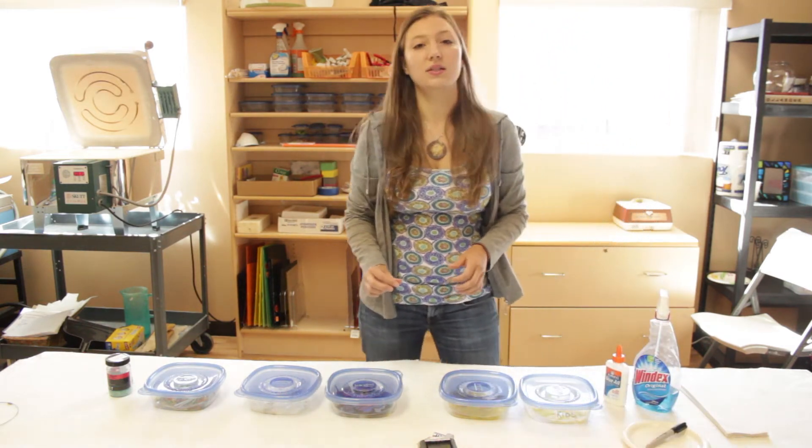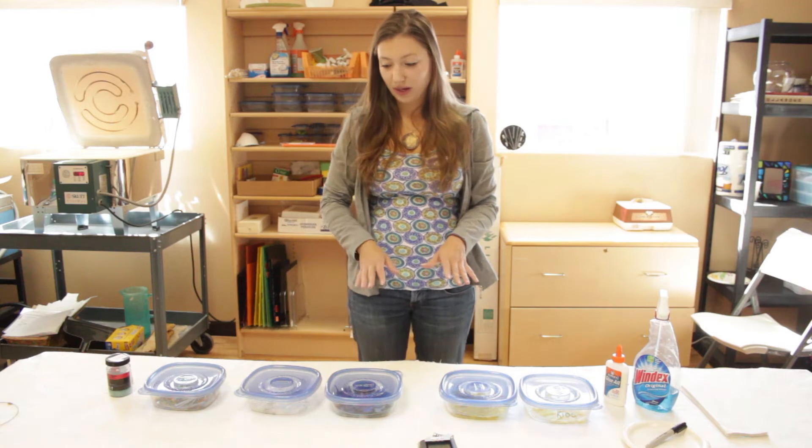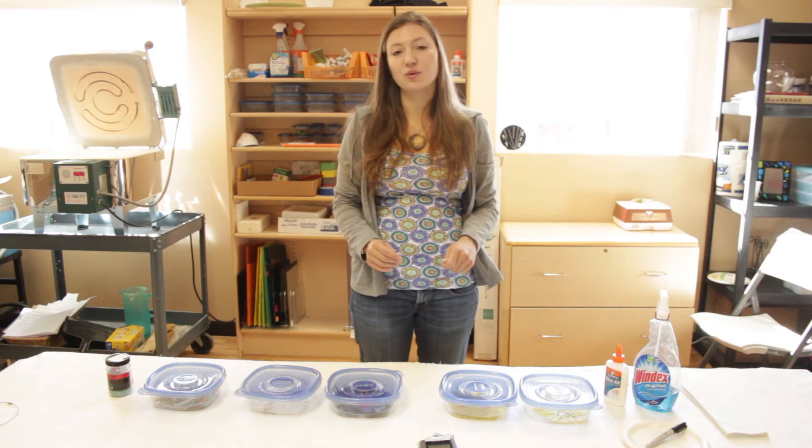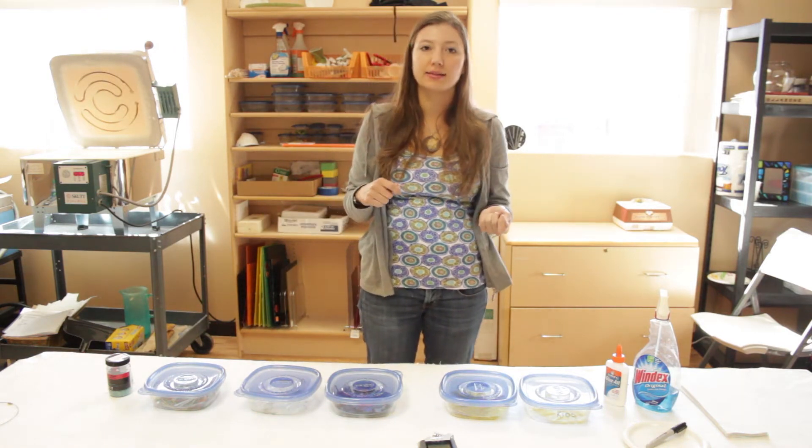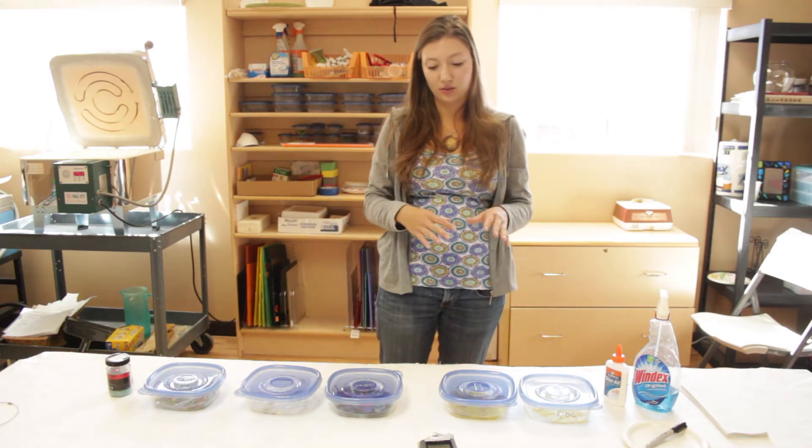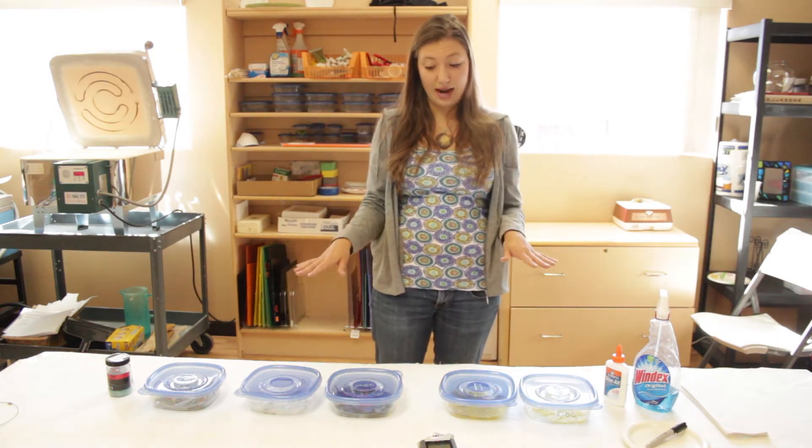So a couple of things we need to learn about glass first. We're working with 90 COE glass. That means a coefficient of expansion and contraction. It means I can't go to Home Depot and get some glass to mix with this glass or crush up a bottle and use that glass too. I have to use all of the same 90 COE.